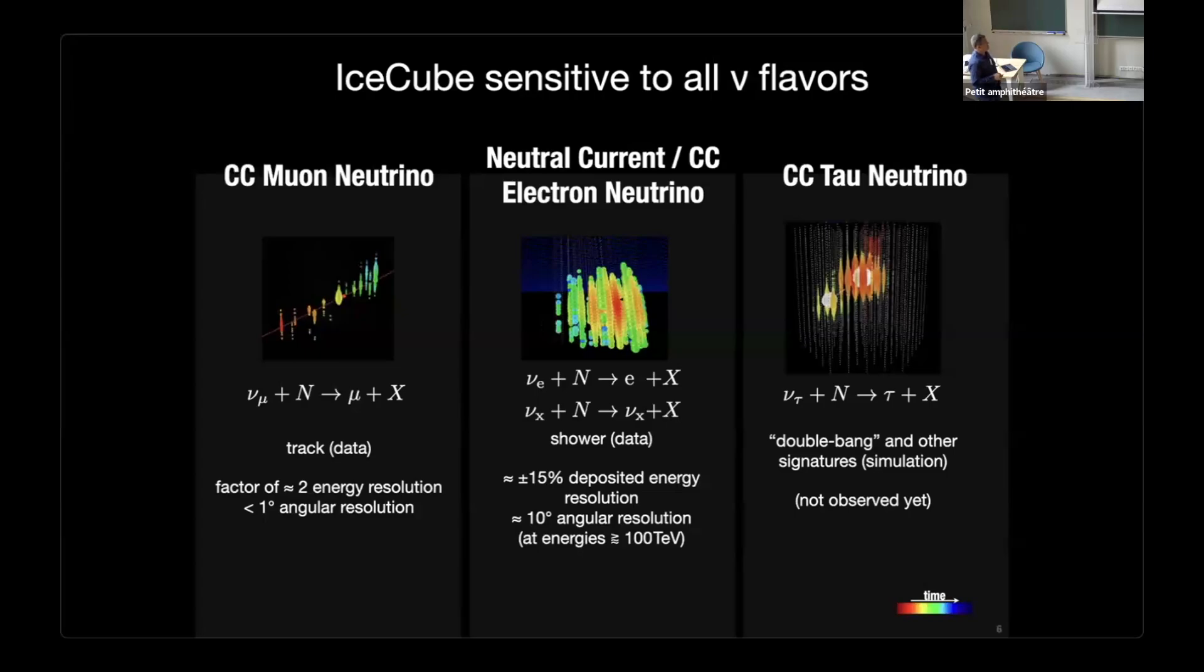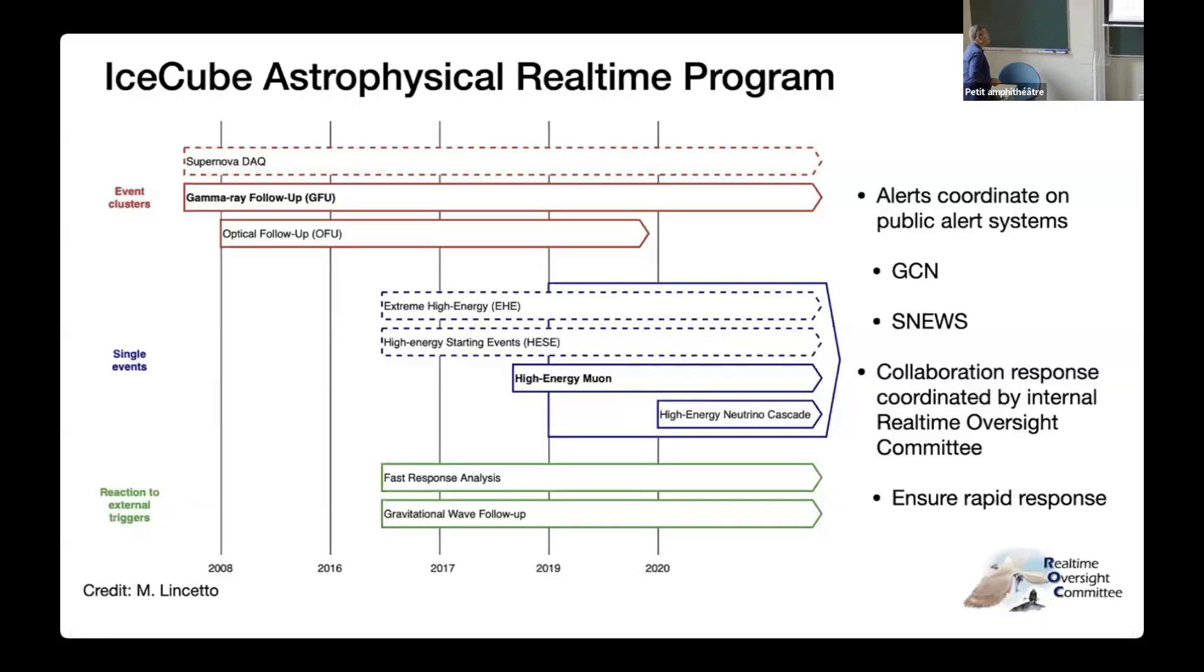Of course, then we hope to see these pretty double bang events. After 15 years of observation, I can point to zero events that look like this. You need to be above a PeV to really see this clear double bang. We do have evidence of nearly overlapping showers with some machine learning algorithms, but that's another topic.